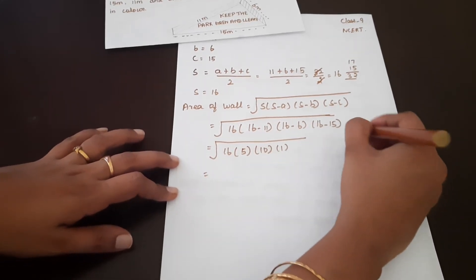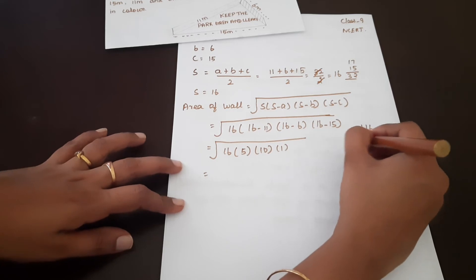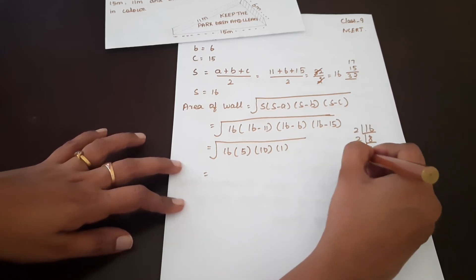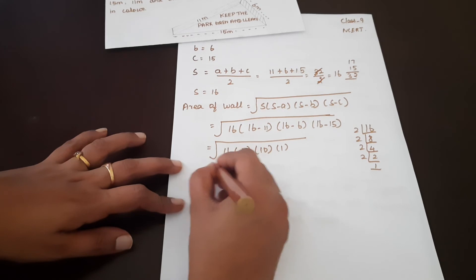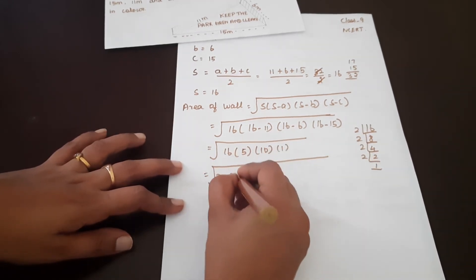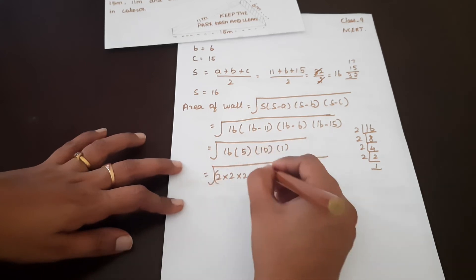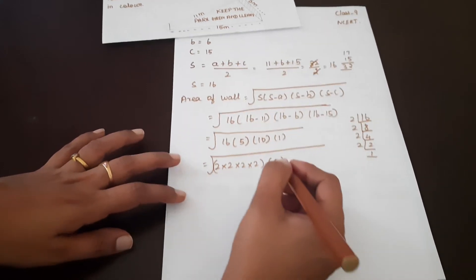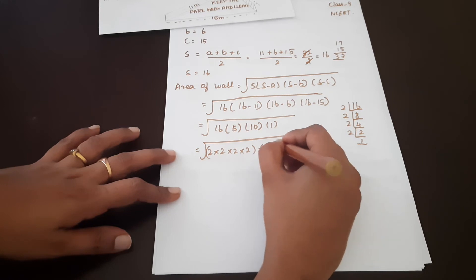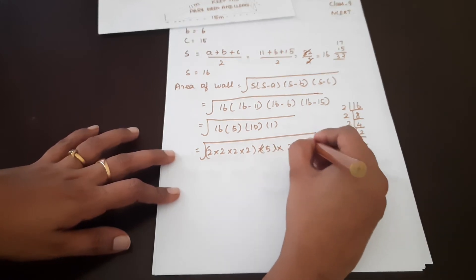So we get root of 16 into 5 into 1 into 10. Now we do prime factorization: 16 is 2 times 2 times 2 times 2, and 10 is 2 into 5. Next we have 5, and 1.